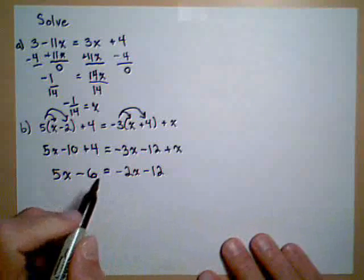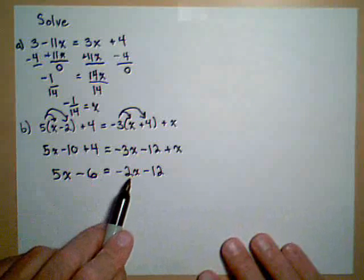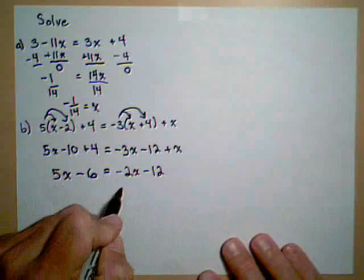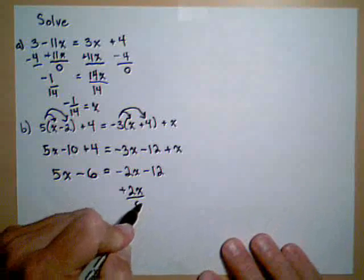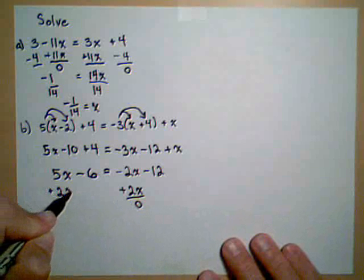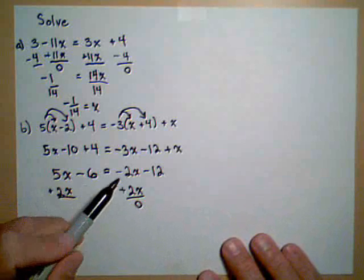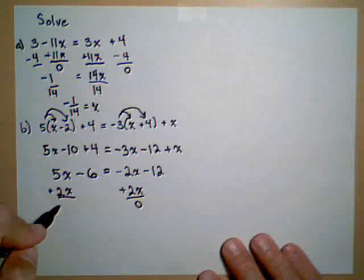Let's get the x terms all on the same side. So I'm going to move the negative 2x over here by adding 2x to both sides. We could go the other direction. We'd get the same answer. It's really up to you if you would have wanted to subtract 5x from both sides instead.